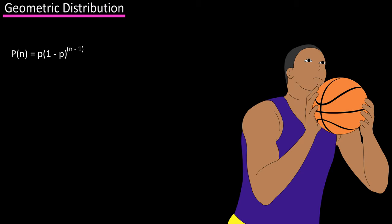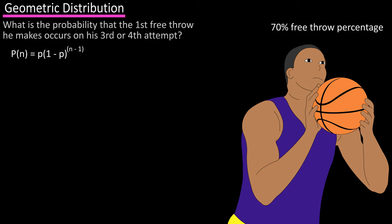let's say that your favorite basketball player has a 70% free throw percentage. What is the probability that the first free throw he makes occurs on the third or fourth attempt in tonight's game? So in reading this question, we see third or fourth attempt,